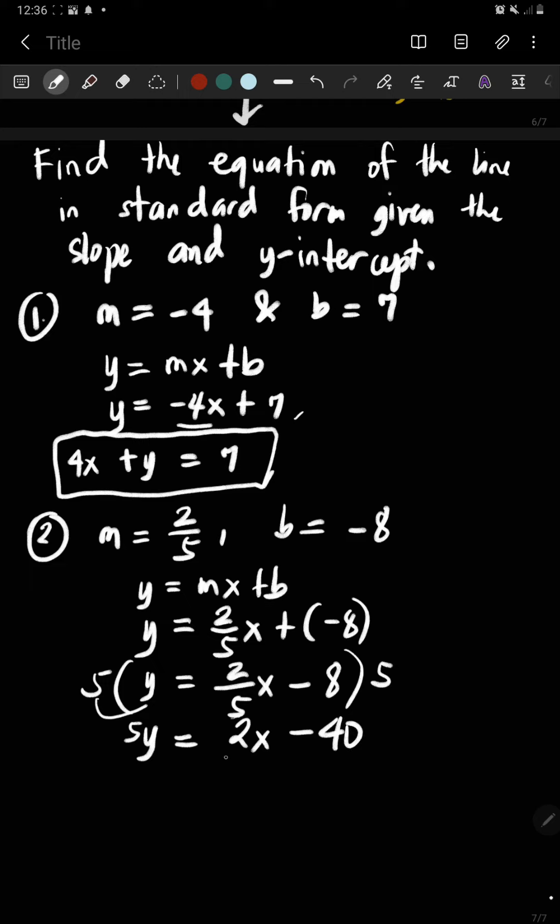And then since the numerical coefficient of x is positive 2, so you use symmetric property. So 2x minus 40 equals y, just interchange. And then we're going to find the standard form of this equation. So transpose 5y becomes minus 5y equals, transpose negative 40 that is positive 40. So the equation of the line is 2x minus 5y equals 40.